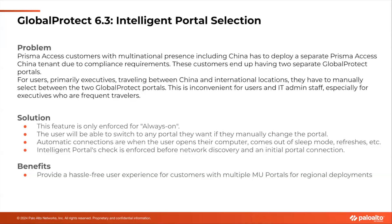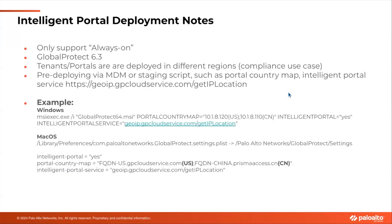This feature provides an intelligent way: GP checks the user's geo-location and intelligently switches to the regional portal, providing the best user experience. When users travel across regions, they don't even need to do this manual switch. This feature is also enforced with the always-on GP configuration. From Global Protect version 6.3 onwards, we started to support this feature. It's quite robust — we support this with both Prisma Access and firewall deployments. There are some staging requirements for this feature to work.